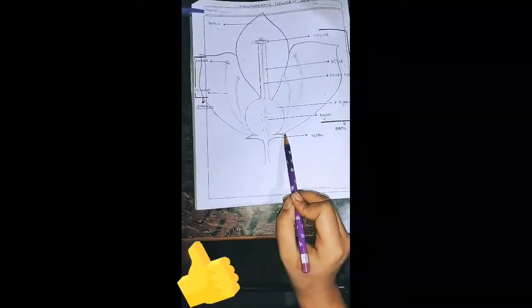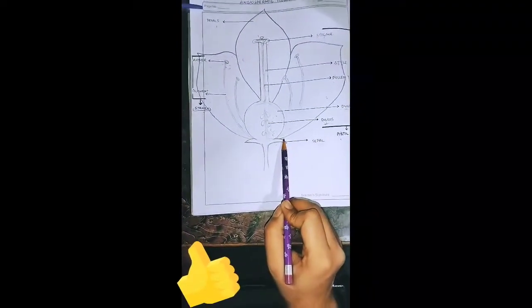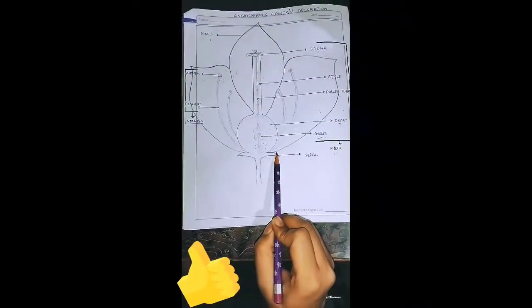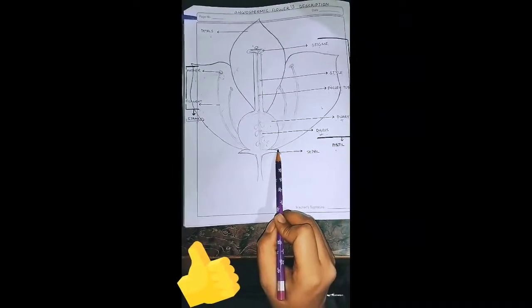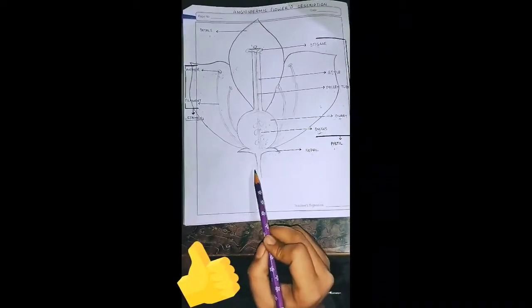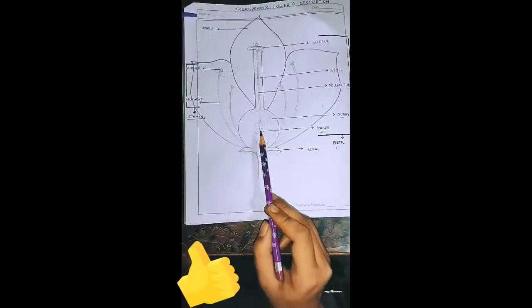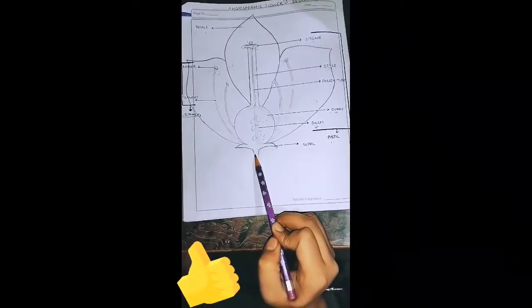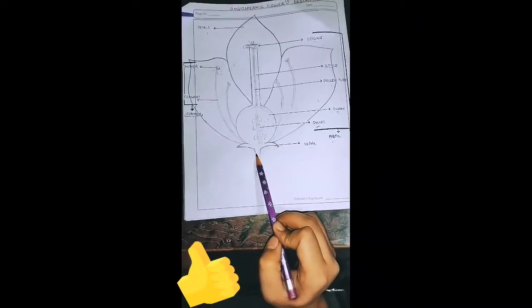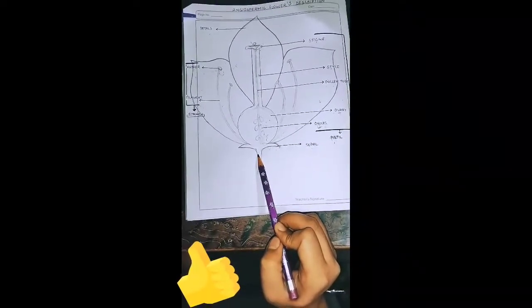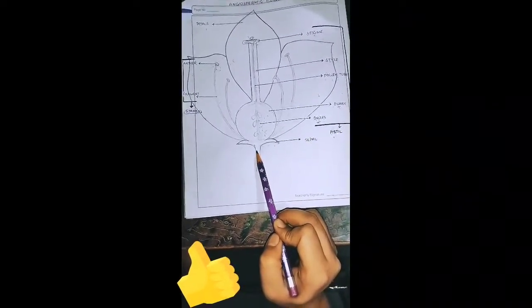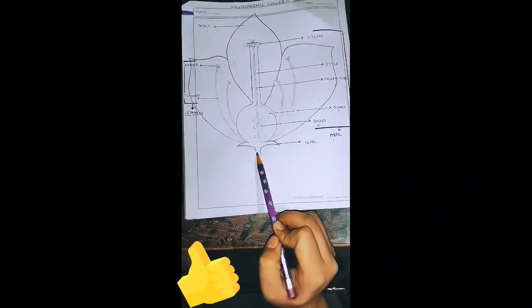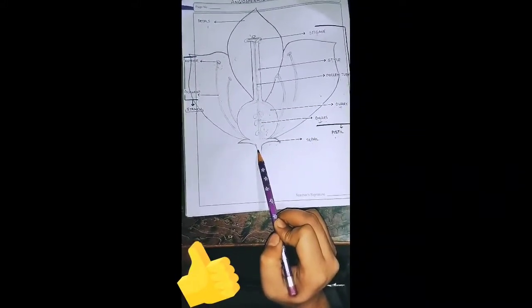Next part is sepals. Sepals are basically small leafy-like structures which are present under the ovary. The main function of sepals is to protect the flower at the bud stage.